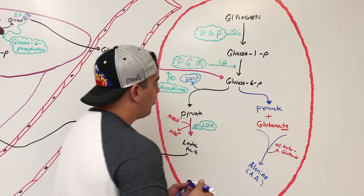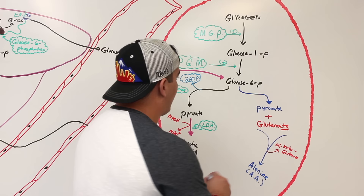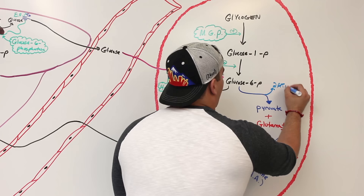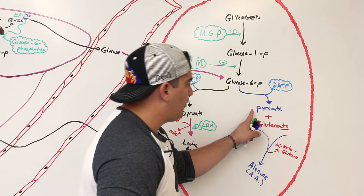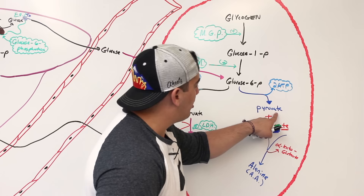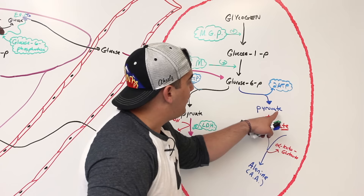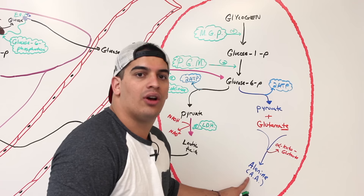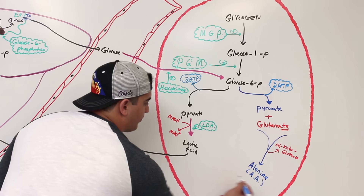So what happened: we took glucose-6-phosphate, turned it into pyruvate — generating 2 ATP by anaerobic mechanisms — and then the glutamate transferred its amine group onto the pyruvate. Glutamate became alpha-ketoglutarate, a keto acid in the Krebs cycle, and pyruvate gained the amine group to become alanine. This alanine can now be transported in the blood.